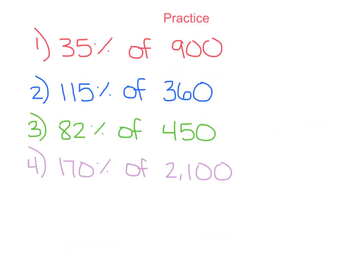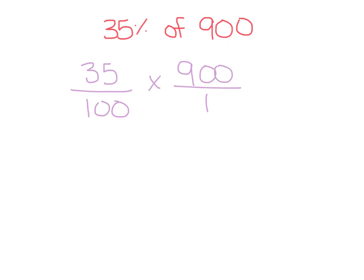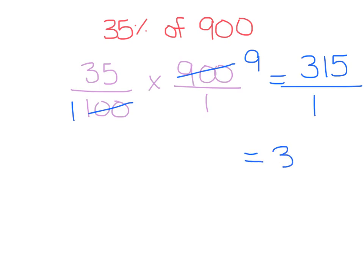Now pause the video and try these four practice problems on your own. Okay, let's go over the first one. Remember, the first step is to write it as a fraction. So 35% would be written as 35 over 100. Of means multiplication, and then 900 over 1. We can divide both 100 and 900 by 100: 100 divided by 100 is 1, and 900 divided by 100 is 9. Multiply across — 35 times 9 is 315, and 1 times 1 is 1. So 35% of 900 is 315.